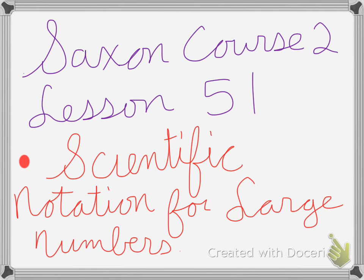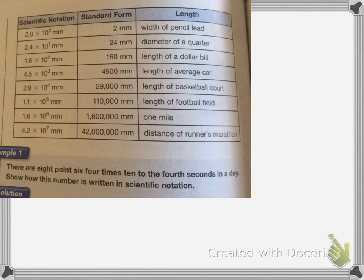Saxon Course 2, Lesson 51 is Scientific Notation for Large Numbers. Scientific notation is a way to write a number as the product of a decimal number and a power of 10.